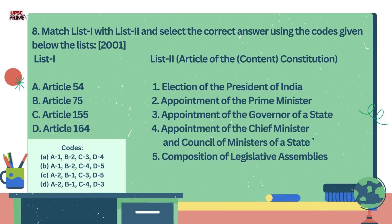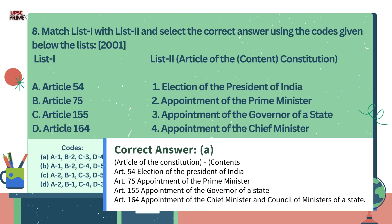Question number 8. Match List 1 and List 2 and select the correct answer using the code given below. Article 54, Article 75, Article 155, and Article 164. The correct answer is Option A. Article 54 — Election of the President of India. Article 75 — Appointment of the Prime Minister. Article 155 — Appointment of the Governor of a State. Article 164 — Appointment of the Chief Minister and Council of Ministers of a State.